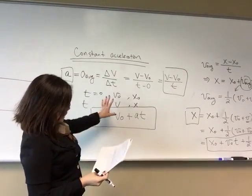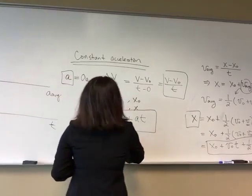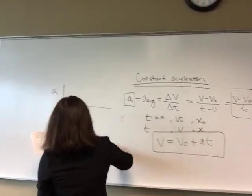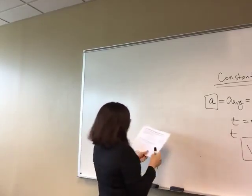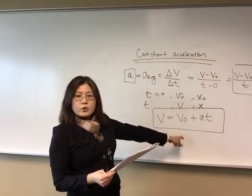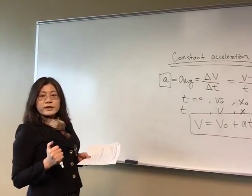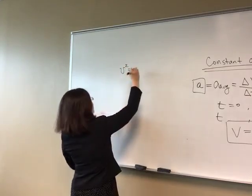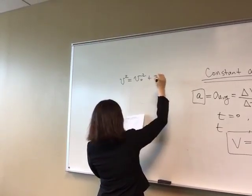Now we're going to talk about the constant acceleration case. We already found that the definition of average acceleration is delta V over delta T. If we are dealing with a constant acceleration, you will have a graph like this — acceleration as a function of time — and when you have a constant acceleration, it means that when you graph it, you're just going to have a straight line because your acceleration does not change.